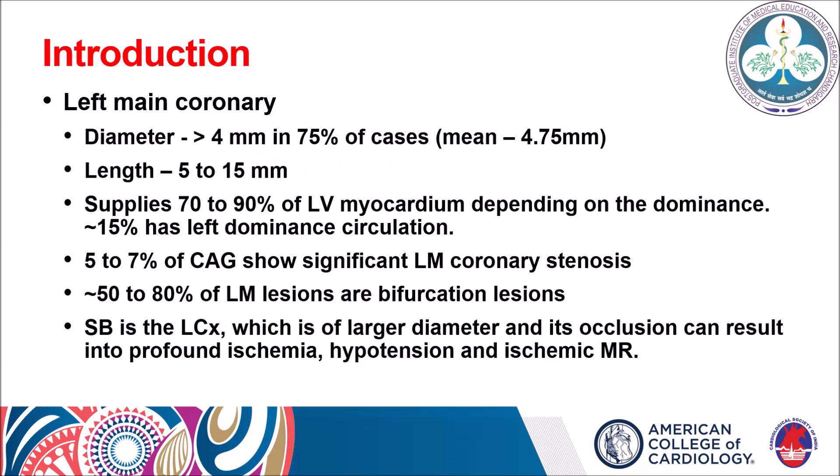Regarding the left main coronary artery, its diameter most of the time is more than 4 mm; a mean diameter is around 4.75 mm and its length varies from 5 to 15 mm. It supplies around 70 to 90% of the LV myocardium and around 15% of patients have left dominant circulation. Among patients with atherosclerotic coronary artery disease, around 5 to 7% have left main coronary artery stenosis on angiography, and out of these, around 50 to 80% have left main bifurcation lesion.